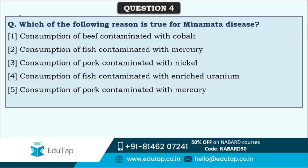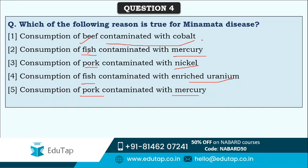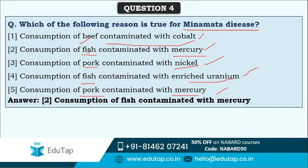Next question: which of the following is true for Minamata disease? It is related to a particular country - that's a hint. Options are: consumption of beef contaminated with cobalt, consumption of fish contaminated with mercury, consumption of pork contaminated with nickel, consumption of fish contaminated with enriched uranium, or consumption of pork contaminated with mercury. The correct answer is option two - consumption of fish contaminated with mercury.